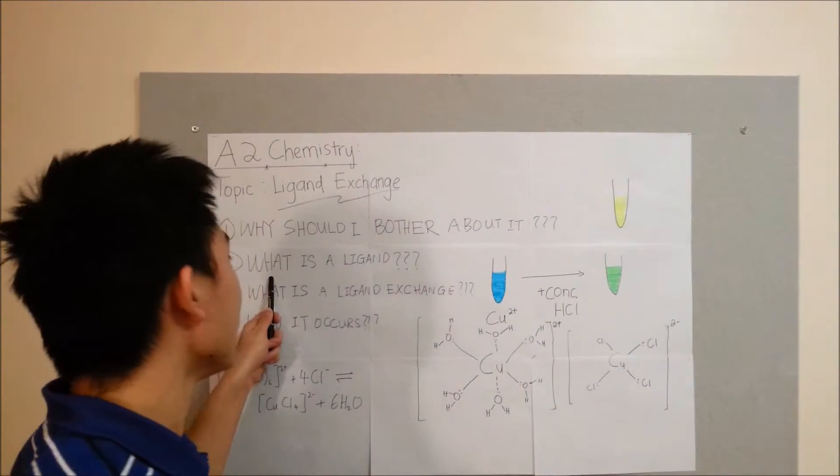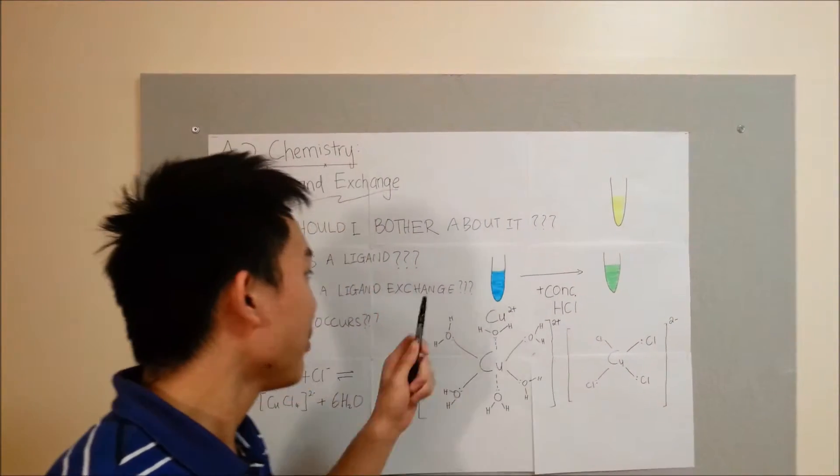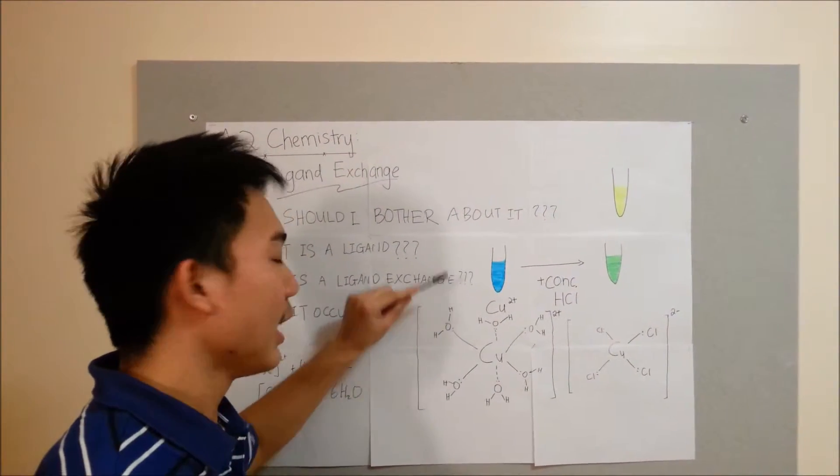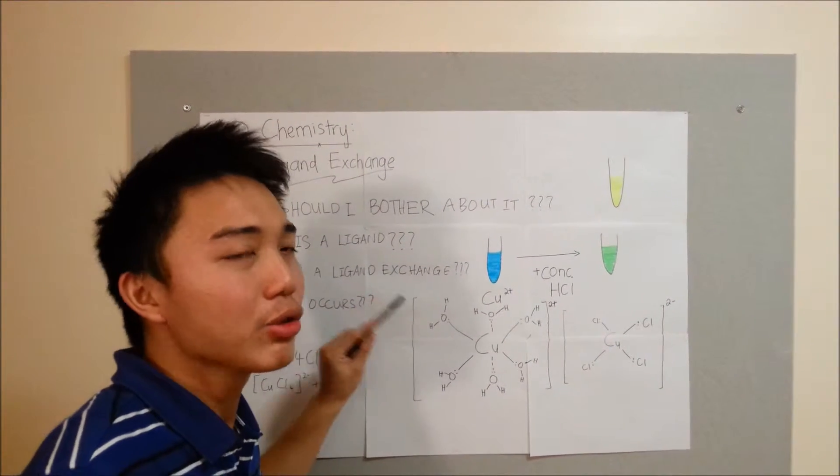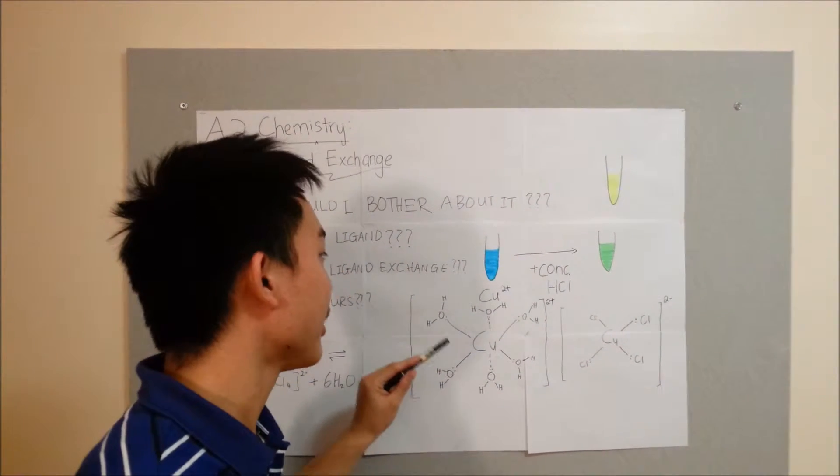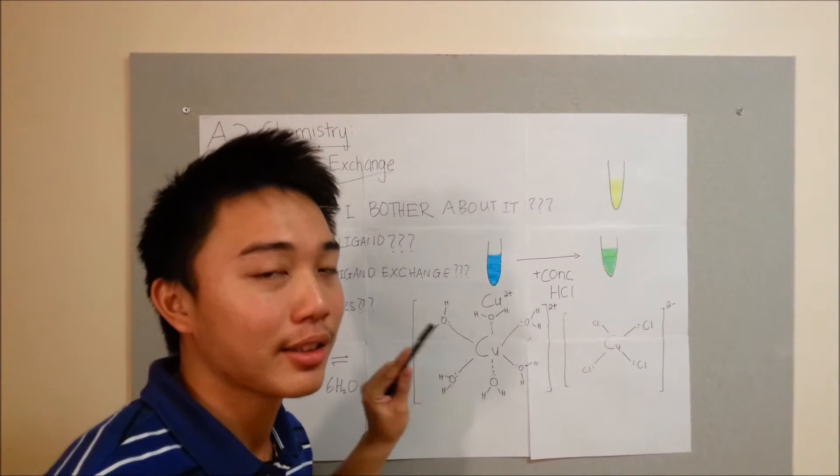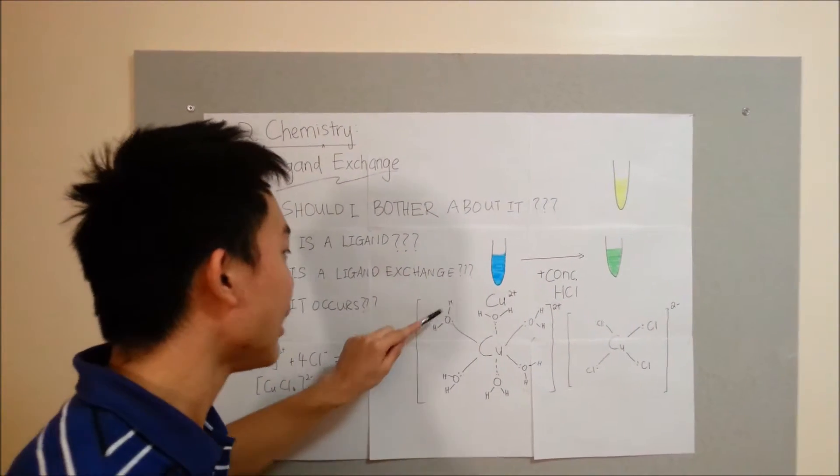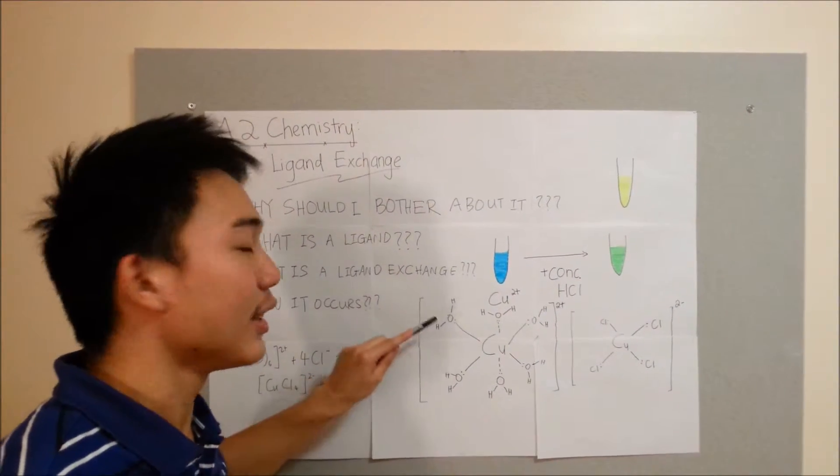All right, the second question is what is a ligand? What exactly is a ligand? Please see here, a ligand is actually neutral atoms or neutral molecules or even ions that actually bond to a central metal ion. So like this. In this case, water is a ligand.